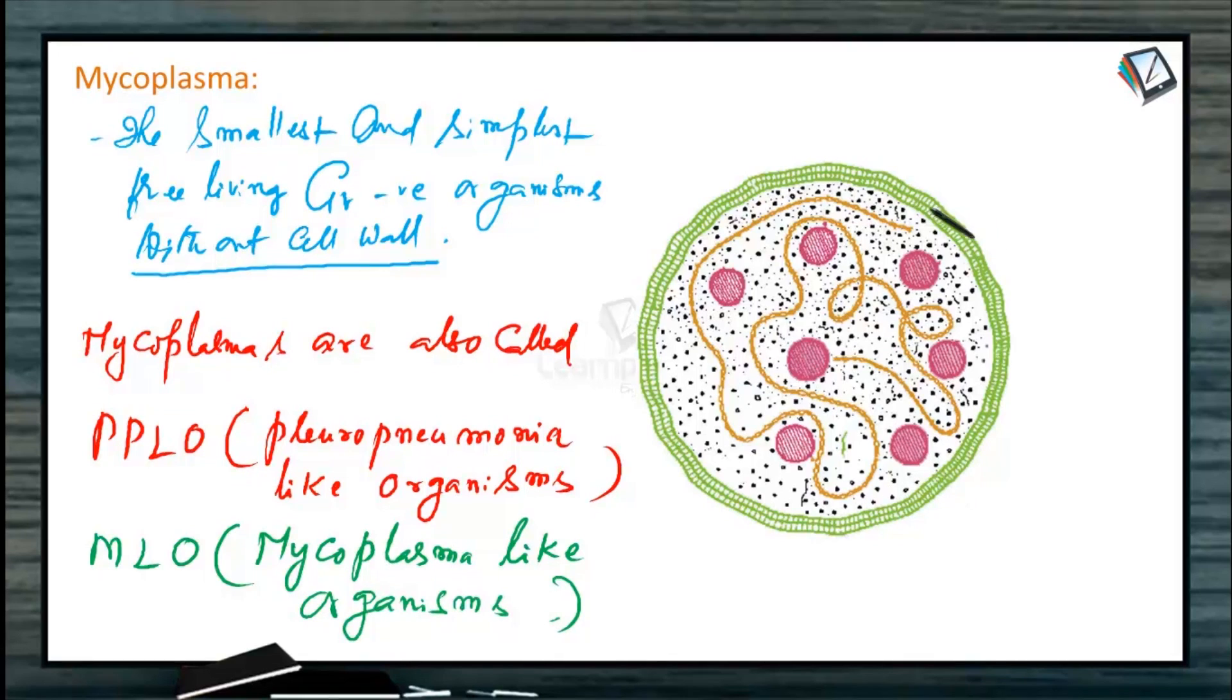Look at this image. This is cell membrane. There is no cell wall. This is the DNA strand, and these are ribosomes.